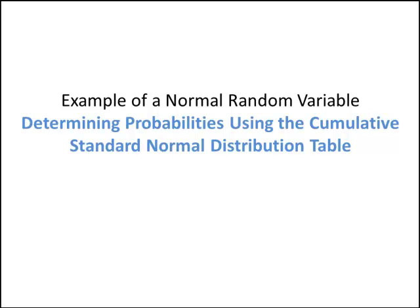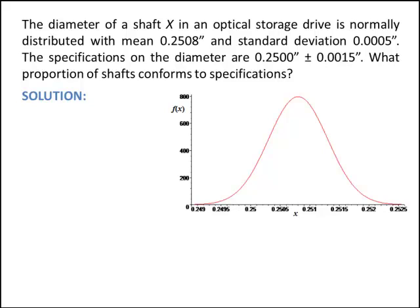In this video, you'll learn about a normal random variable. We'll be determining the probability of a normal random variable using the cumulative standard normal distribution table. The diameter of a shaft x in an optical storage drive is normally distributed with a mean of 0.2508 inches and a standard deviation of 0.0005 inches.